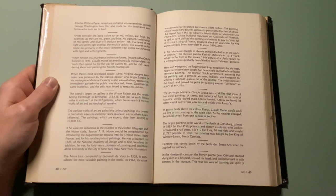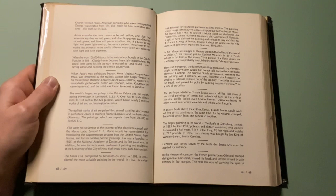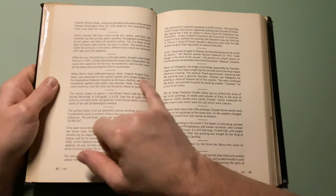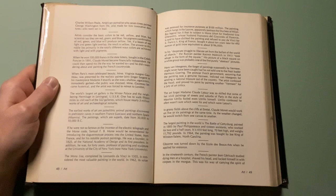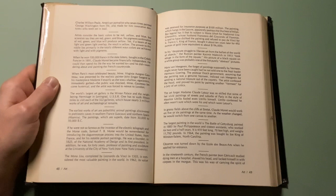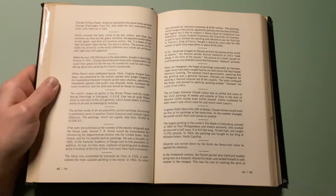France's most celebrated beauty, Madame Virginie Gautreau, was presented by the realistic painter John Singer Sargent in his masterpiece Madame X exactly as she was: shallow, egocentric, and immodestly garbed. The public was shocked. Madame Gautreau became hysterical, and the artist was forced to retire to London.